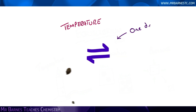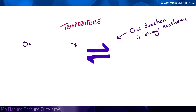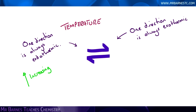Starting with temperature. A nice thing to remember is that if you've got a reversible reaction, one direction is always going to be exothermic and one direction is going to be endothermic. Now if you increase the temperature, it's always going to favour the endothermic side. So regardless of what type of reaction you've got, if you increase the temperature, it will favour the endothermic direction.